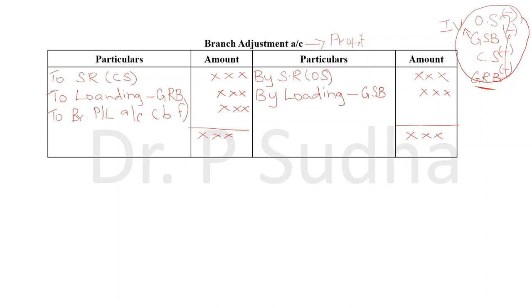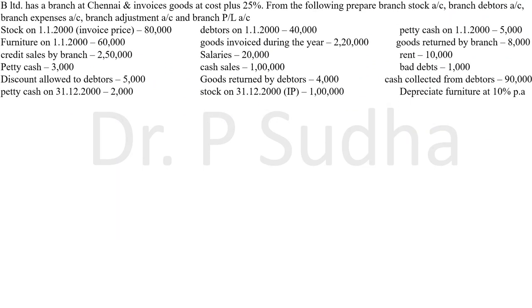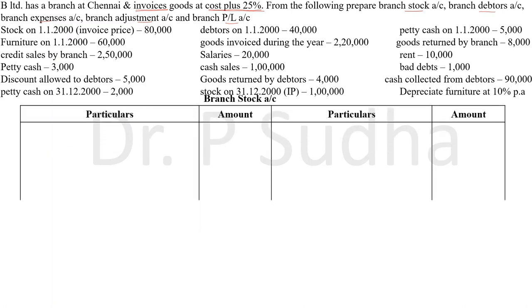Hope you understood the format. Now I will explain this with an example. B Limited has a branch at Chennai and invoices goods at cost plus 25%. This tells us it is an invoice price problem. From the following information, we need to prepare branch stock account, debtors account, expenses account, adjustment account, and P&L account.